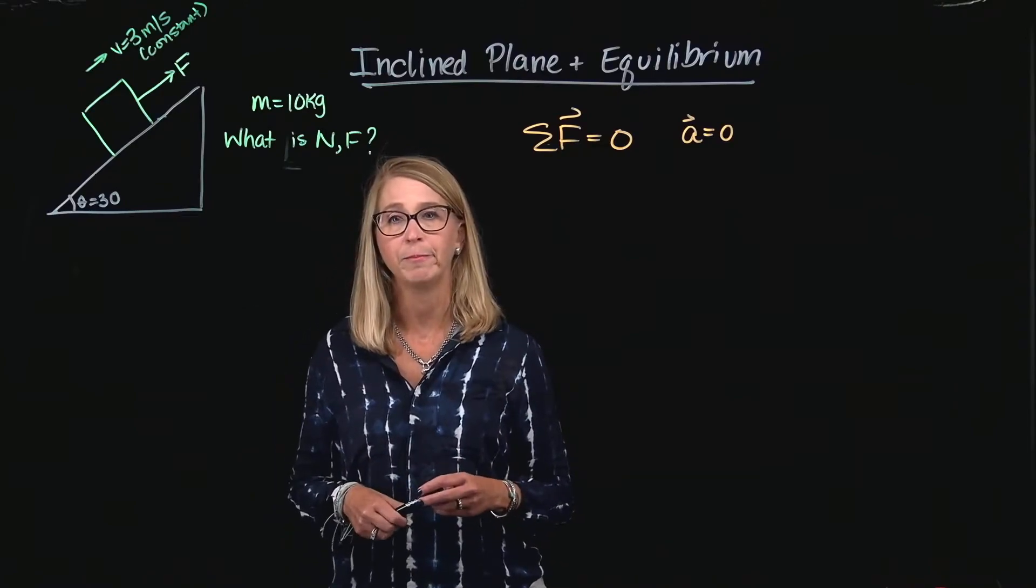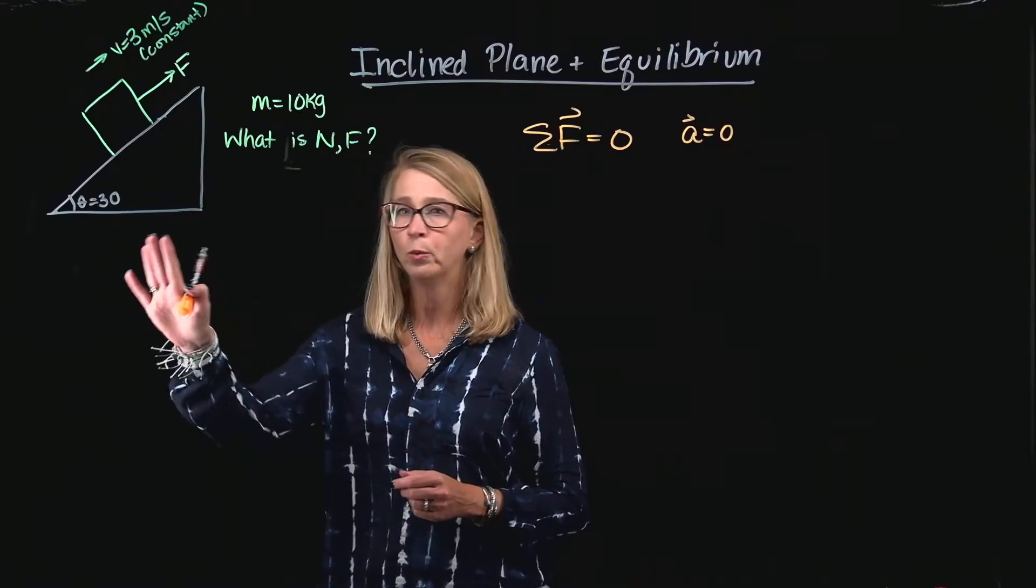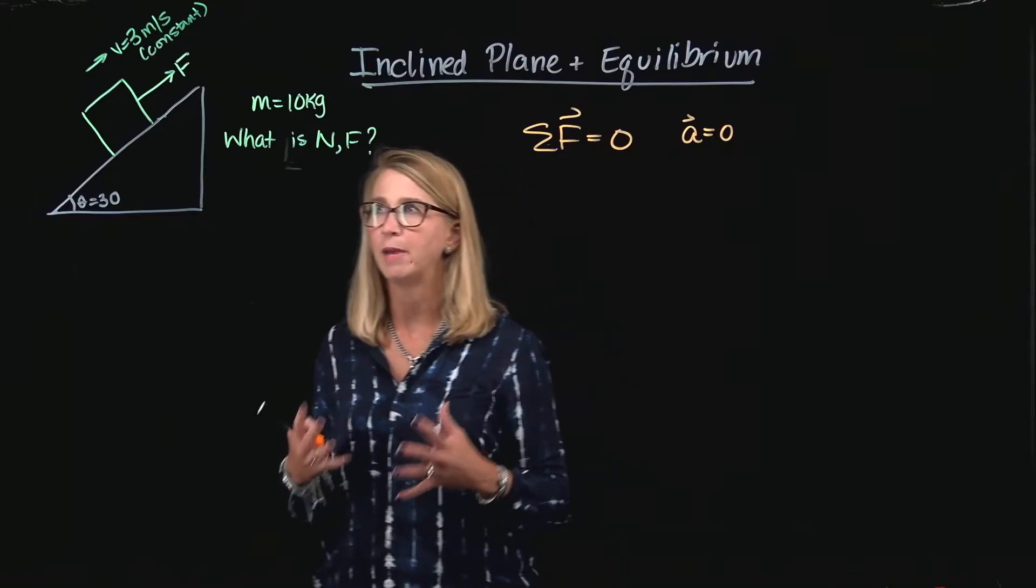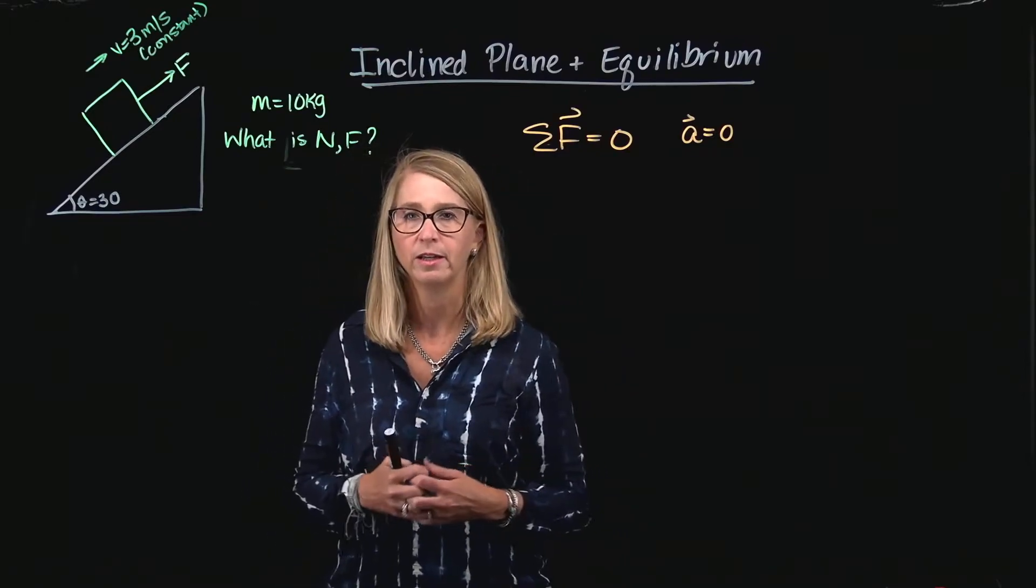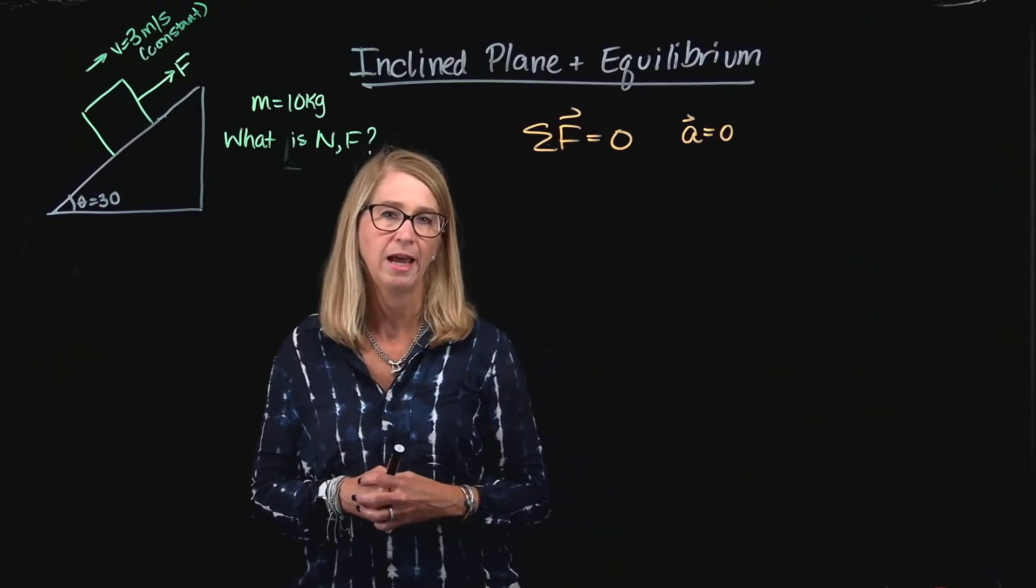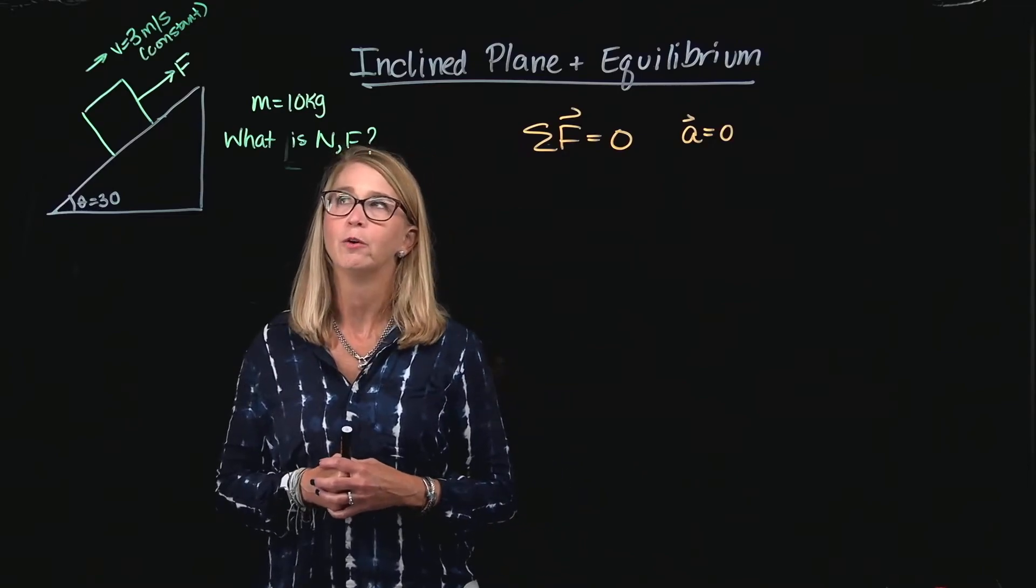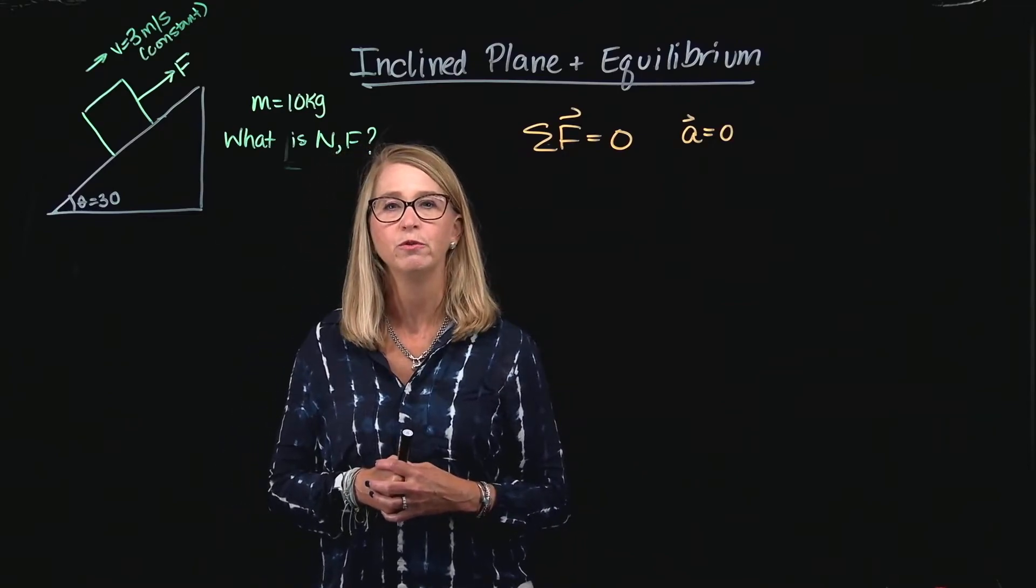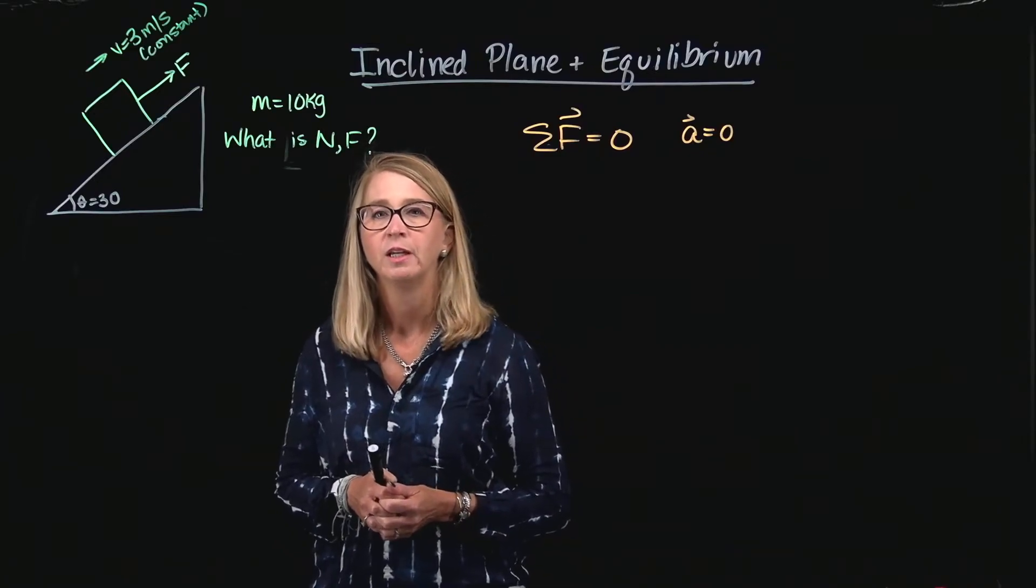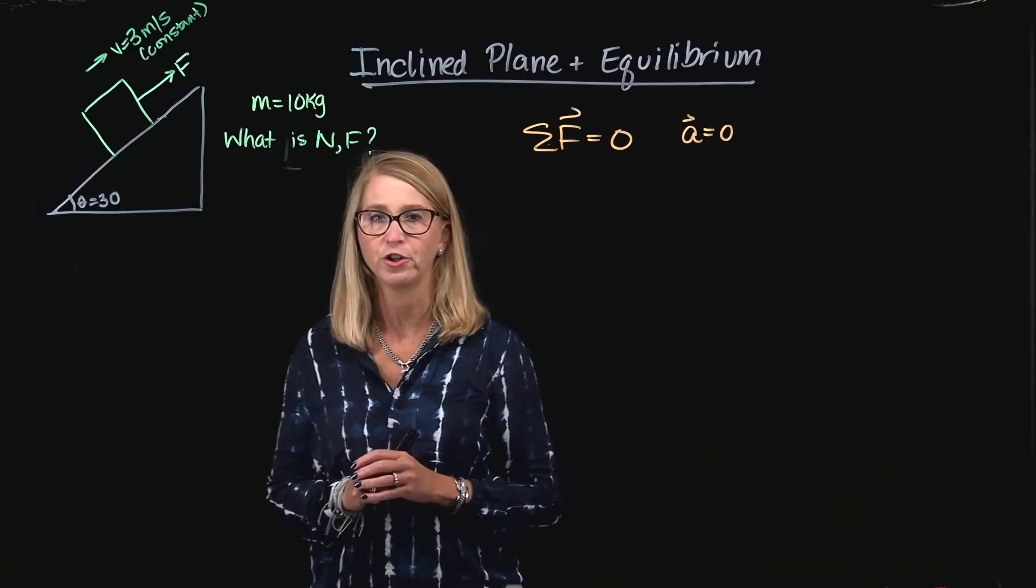And so let's take a look at it. All right, so here's our incline plane. We're saying that our incline has an angle of 30 degrees, and I have a mass sitting on that incline plane, and there's an applied force that's pulling the mass up the incline. Now, in this scenario, we're told that the mass is moving up the incline with a constant velocity of 3 meters per second. And so for us, we know that that means that the acceleration is zero.